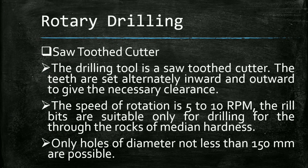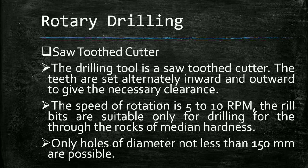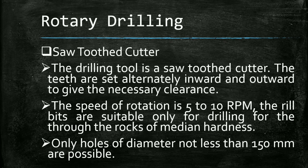The second subtype of rotary drilling is the saw-toothed cutter. In this type, the drilling tool is a saw-toothed cutter where the teeth are set alternately inward and outward to give the necessary clearance. The speed of rotation is 5 to 10 RPM. The drill bits are suitable only for rocks of median hardness, and holes of diameter not less than 150 mm are possible.